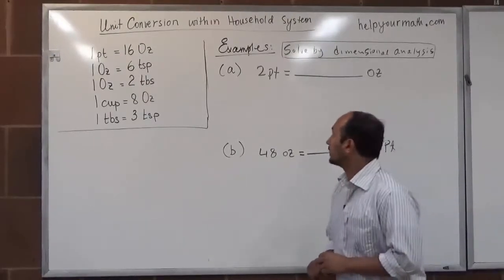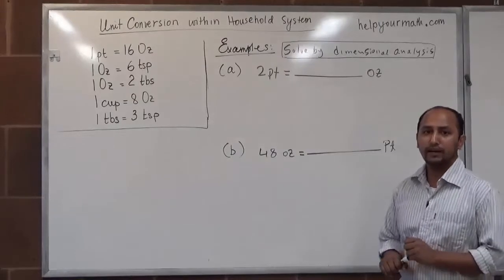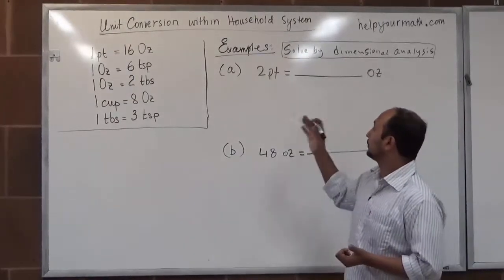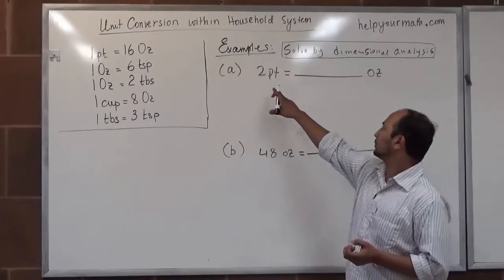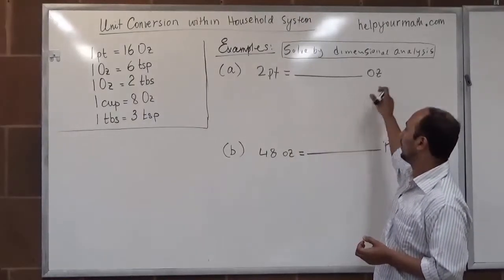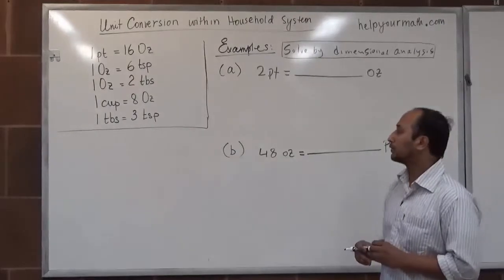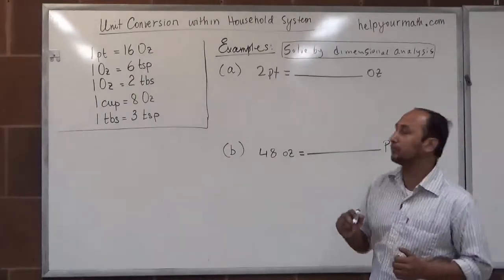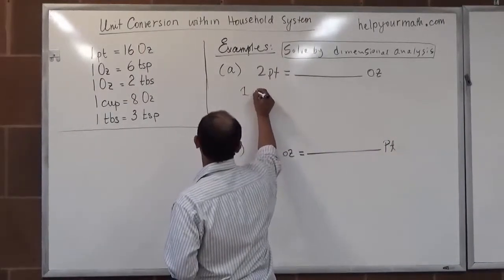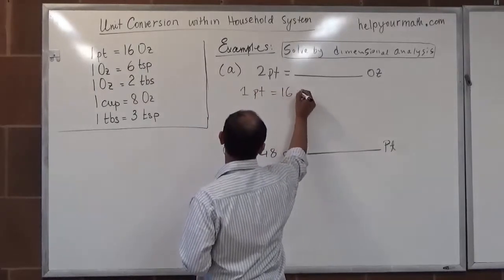First example, we will be solving by using dimensional analysis. We have been given: 2 pints equals how many ounces? Well, from the conversion table, we know 1 pint is equal to 16 ounces.